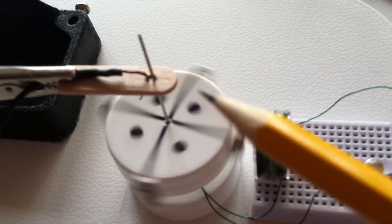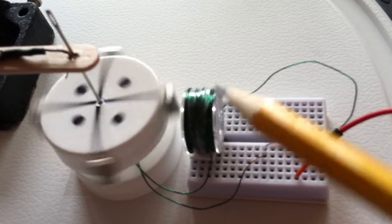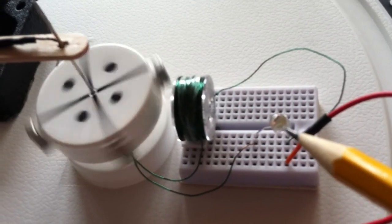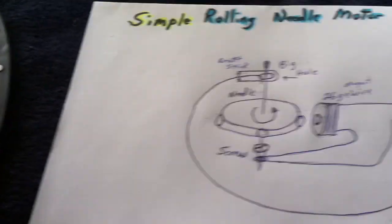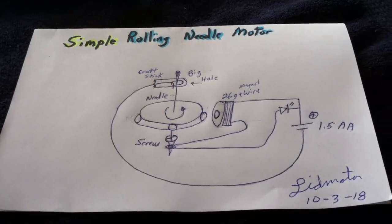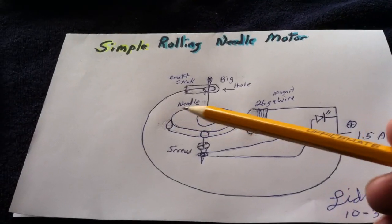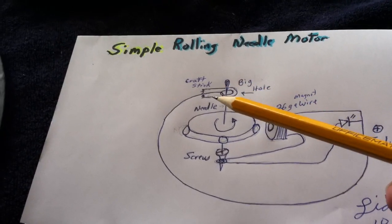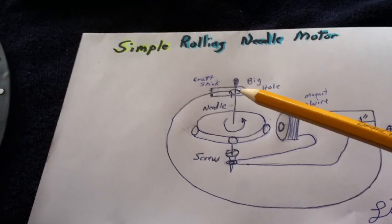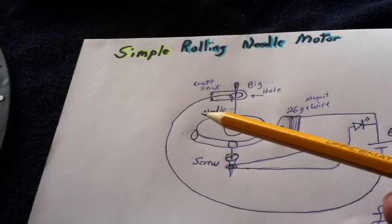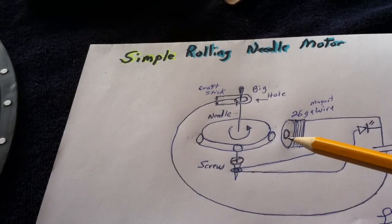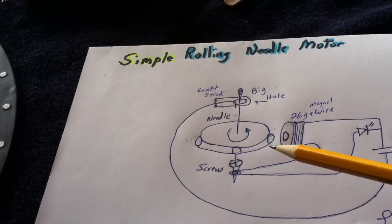When the break happens, the magnetic field in the coil collapses and causes the LED to flash. Just a volt and a half. The needle rolls around in that hole, and when it touches the wire, the coil is energized and pushes the rotor around.